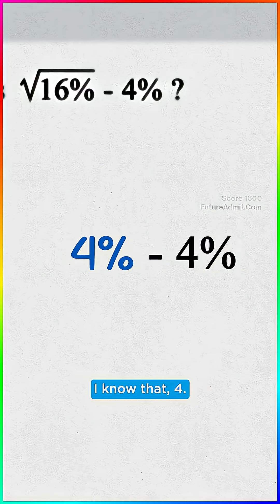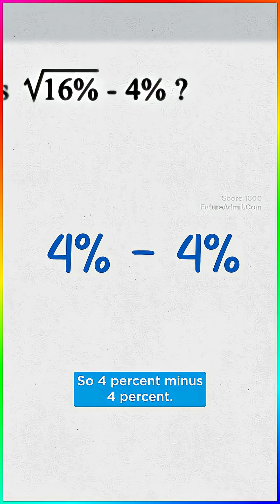Start here. Root 16. I know that. Four. So four percent minus four percent. Easy. Zero.